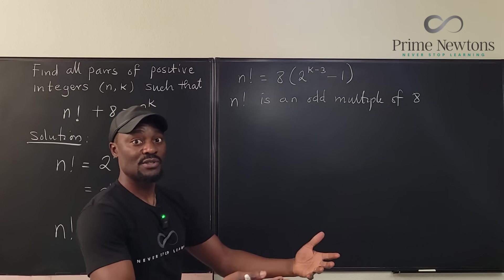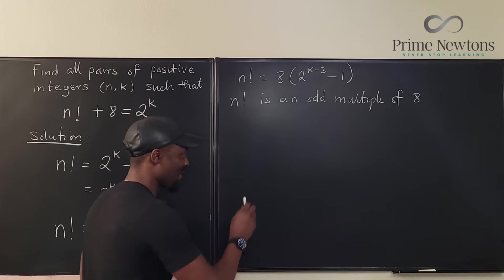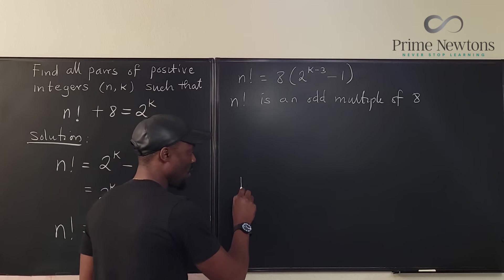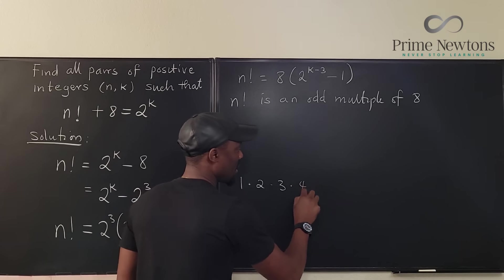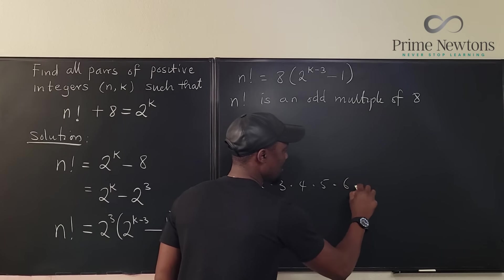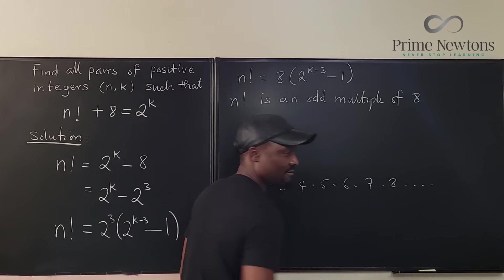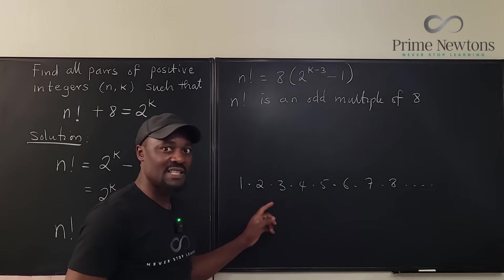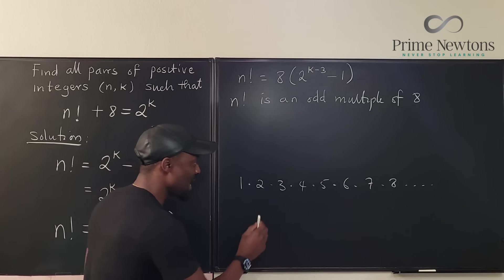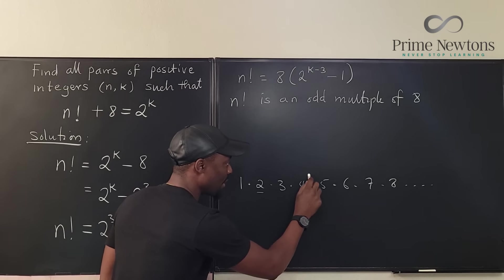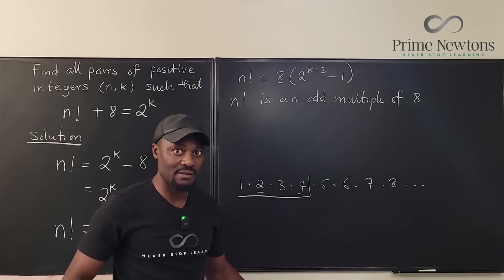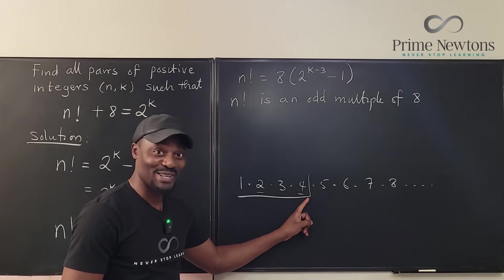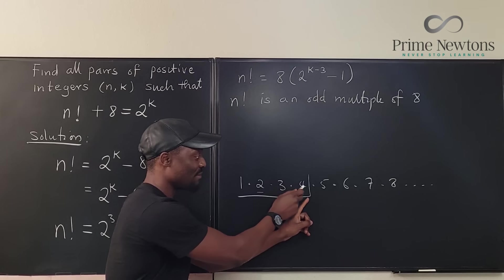Let's investigate and see what options we have. If I want to write any factorial, let me just keep writing and stop somewhere. Look: 1 times 2 times 3 times 4 times 5 times 6 times 7 times 8, and I keep going like that. All I'm looking for is that the number I'm getting is divisible by eight. Well, as soon as 2 and 4 show up, that condition is satisfied.